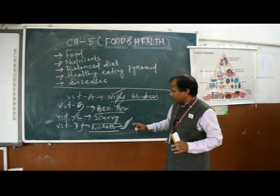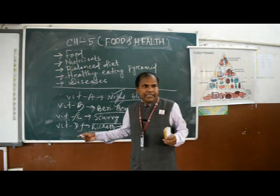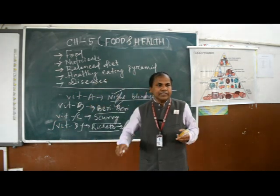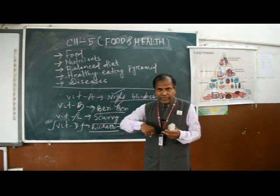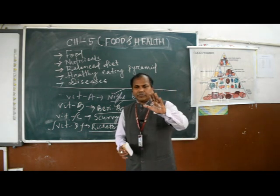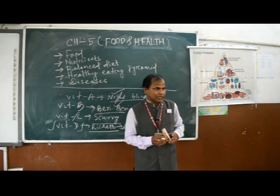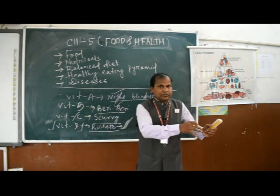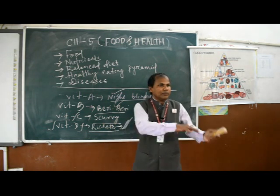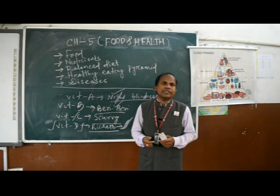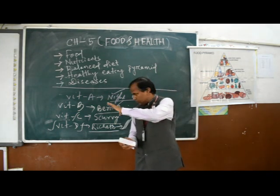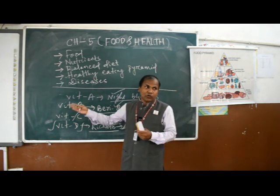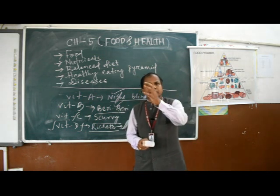Vitamin D, calcium, and phosphorus are interrelated. If Vitamin D is lacking in your body, then calcium and phosphorus cannot be properly absorbed even if you eat foods rich in those minerals. Similarly, if calcium and phosphorus are inadequate, Vitamin D sources alone won't help. These three work together — calcium and phosphorus help Vitamin D get assimilated in the body, and Vitamin D helps calcium and phosphorus get assimilated. Sources of Vitamin D include eggs, milk, and butter.